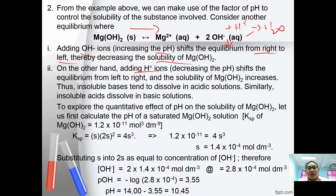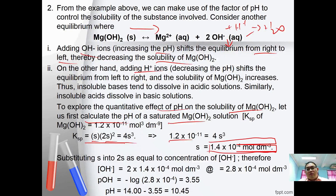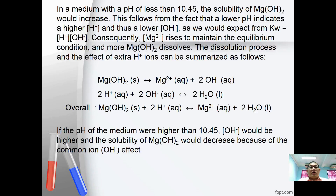To explore the quantitative effect of pH on solubility of Mg(OH)₂: KSP = s(2s)² = 4s³. Substituting KSP gives s = 1.4 × 10⁻⁴ mol dm⁻³. Then [OH⁻] = 2s = 2.8 × 10⁻⁴, giving pOH = 3.55 and pH = 10.45. If the medium has a pH less than 10.45, solubility of Mg(OH)₂ will increase, because lower pH means higher [H⁺], which lowers [OH⁻], causing more Mg(OH)₂ to dissolve.